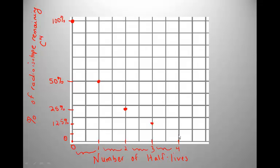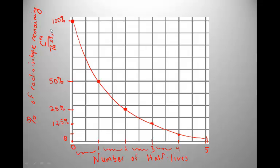After another half-life, there's only 6.25% of the original carbon-14 present in the sample. Beyond that, if we waited another half-life, it would be much harder to measure how much is remaining because there would be such a minuscule amount. If we create a best-fit curve, we'll see that there is a pattern. What we've created is a radioisotope decay curve. Taking another isotope, for example thorium-235, we would get the exact same graph because for every half-life, you're going to have half of your sample remaining.